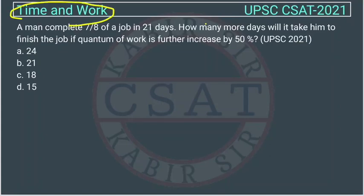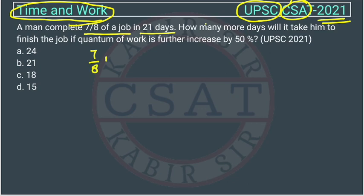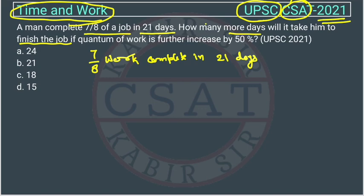This is a question from Time and Work asked by UPSC in the CSAT paper of 2021. A man completes 7/8 of a job in 21 days. How many more days will it take him to finish the job if the quantum of work is further increased by 50 percent?